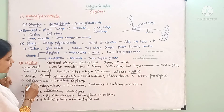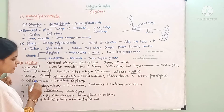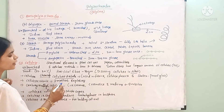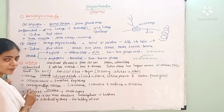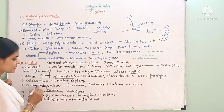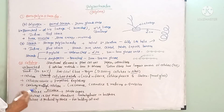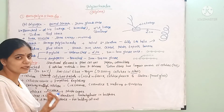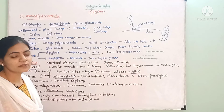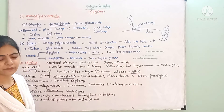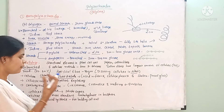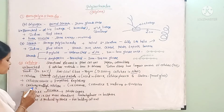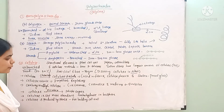Cellulose nitrate is used in explosives and as a propellant. Carboxymethyl cellulose is used as an emulsifier in ice creams, cosmetics, and medicines — it provides a smooth texture.